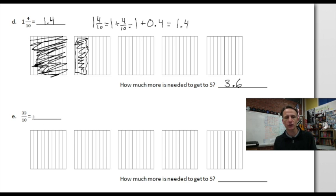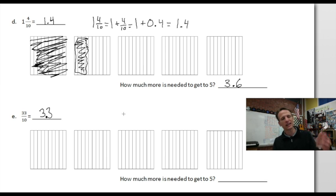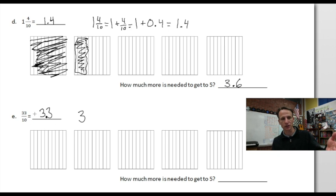Thirty-three tenths — we did this in lesson one. A helpful hint: to write this as a decimal, write thirty-three and then the decimal point goes before the tenths place, giving you three point three. This helps when you get to things like three hundred ninety-six hundredths or twelve hundredths — it helps you align your place value properly. For the mixed number: how many tens in thirty-three? There are three, because three times ten is thirty, leaving three tenths. So thirty-three tenths equals three and three tenths.